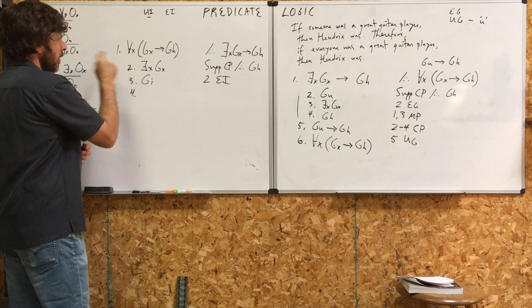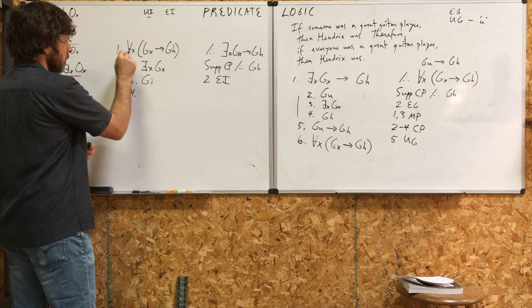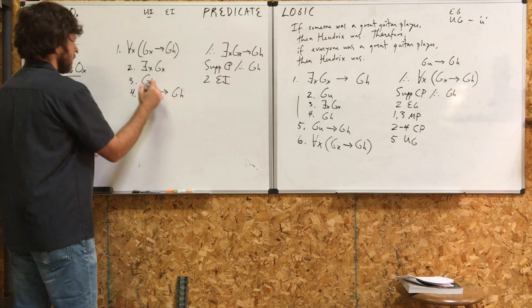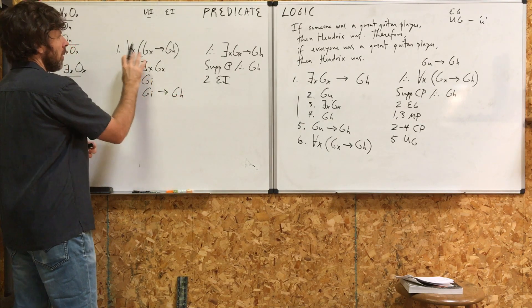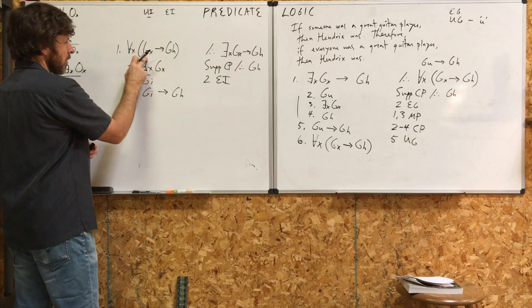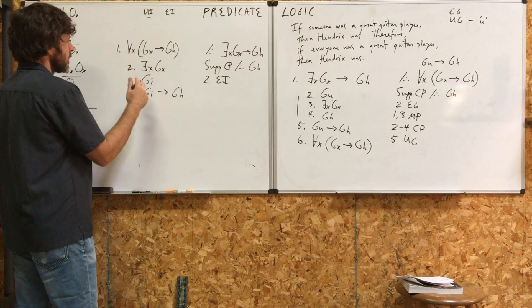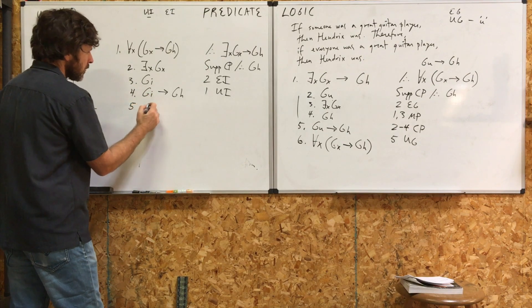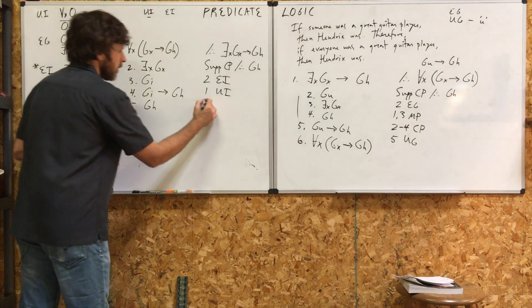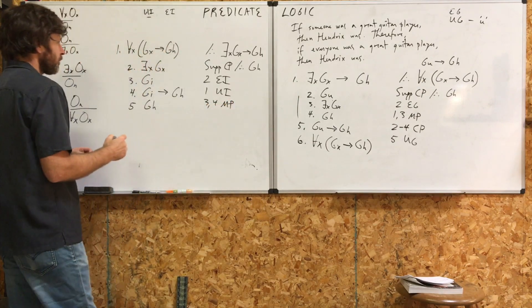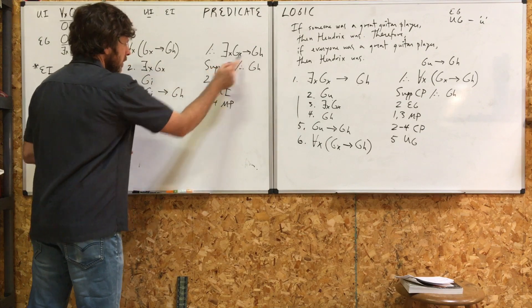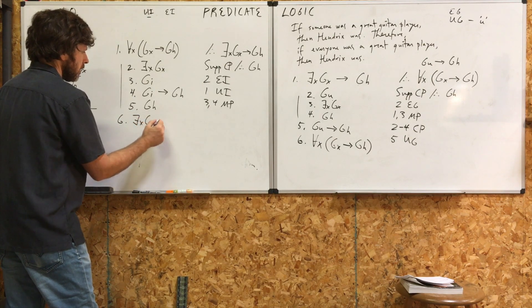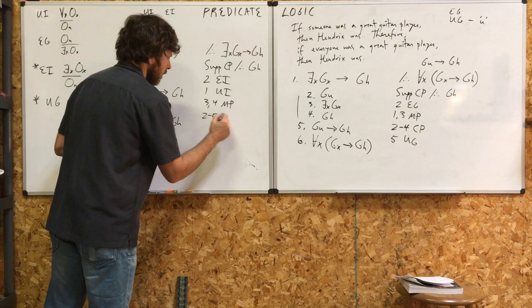Given this premise right here, let's instantiate over this universal quantification, and we're going to get, if I is G, then H is G. If it's true that for all things that are great guitar players, Hendrix is, or H is. So, we're going to write one UI. Now, look at lines three and four. Using modus ponens, we get GH. Three and four MP. Look, from the supposition, something is G, we get Hendrix is G. Line six, GH. Two through five, CP.